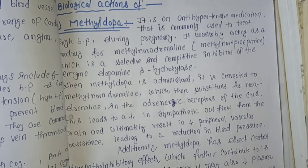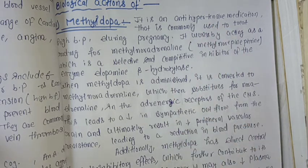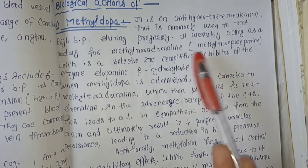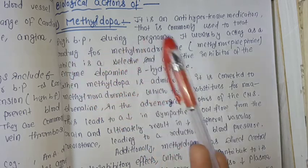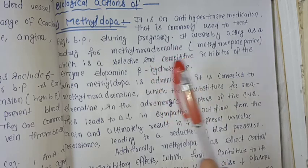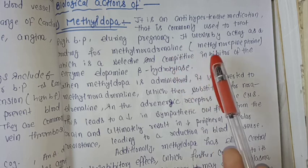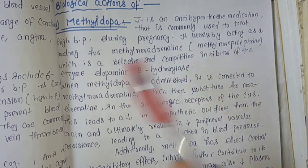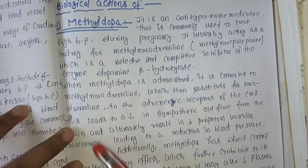Biological action of methyldopa: it is an anti-hypertensive medication. A common example is methyldopa, which is used to treat high BP during pregnancy. It works by acting as a prodrug for methyl-noradrenaline, which is a selective and competitive inhibitor of the enzyme dopamine beta-hydroxylase.